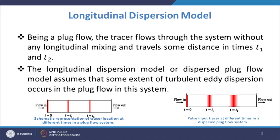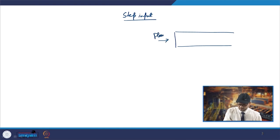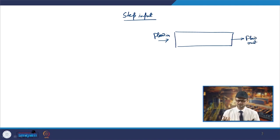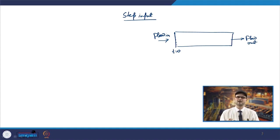Similarly for step input: in ideal plug flow, after the mean residence time the dimensionless concentration rises sharply to 1. Whereas in dispersed plug flow, at t = t₁ there is certain dispersion, and at t = t₂ the concentration rises more gradually. Accordingly the step-response curve moves up in a spread manner even in the case of step input.